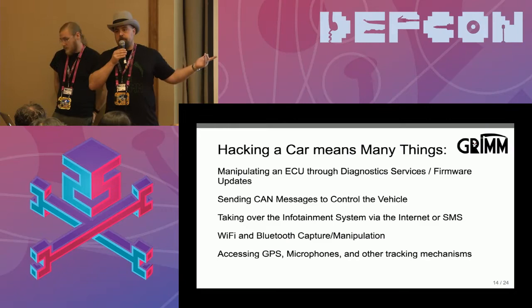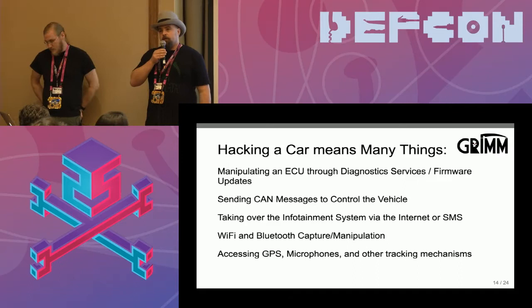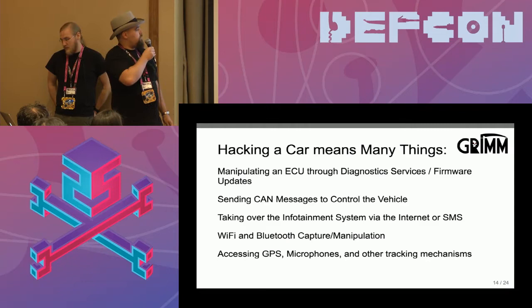These infotainment systems are almost always connected to the CAN bus. Now, this segregation is actually happening in the real world — the infotainment, which used to be on every CAN bus, is now only on a couple of them, which is great, especially isolating it from the safety critical systems. But you still have to pivot off something, because there are devices connected to both CAN buses. You've got to find a device that's also vulnerable to compromise to pivot onto the bus you want to get to.